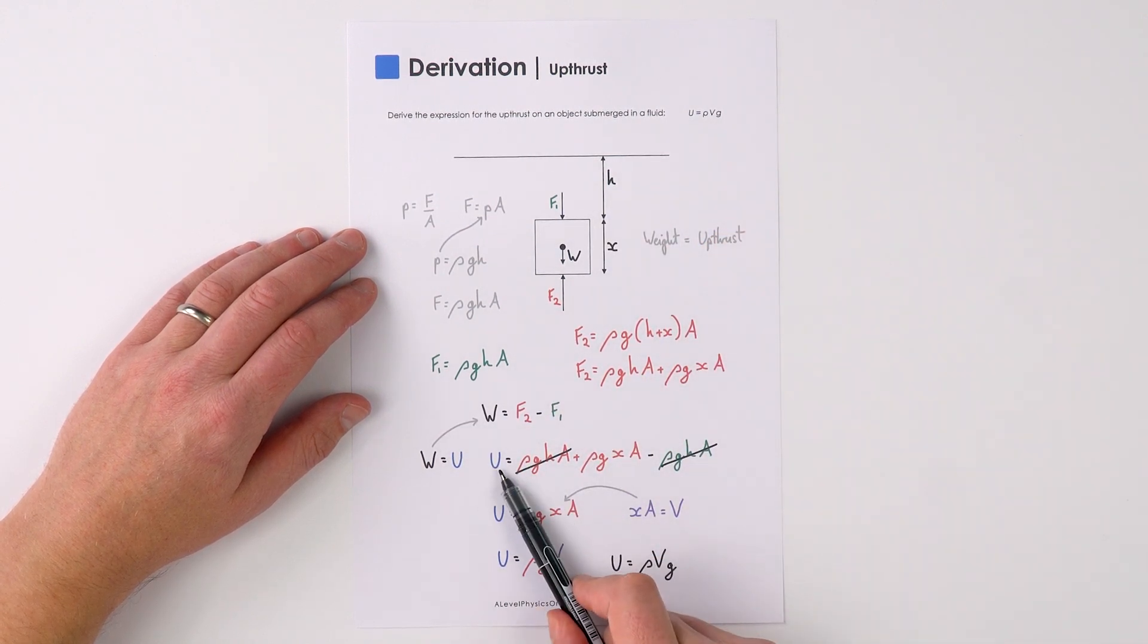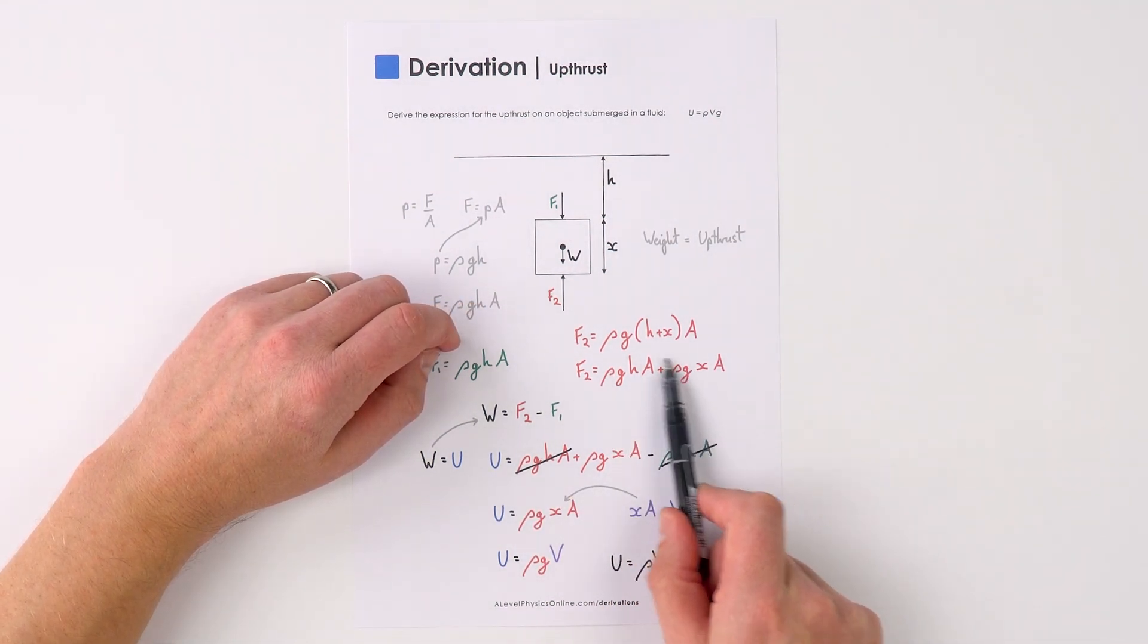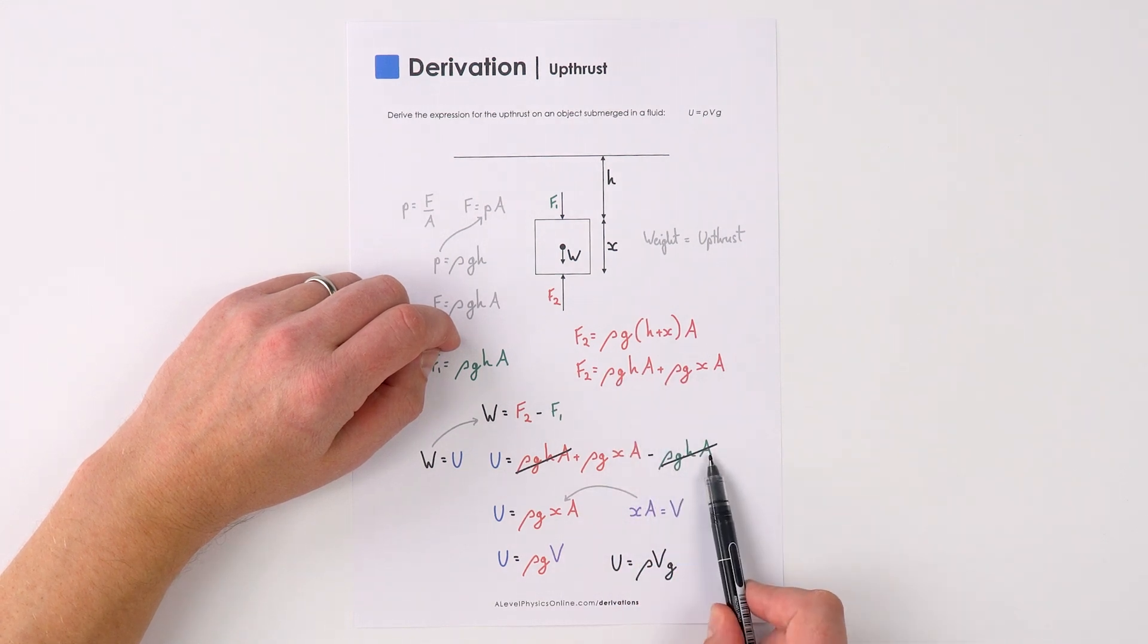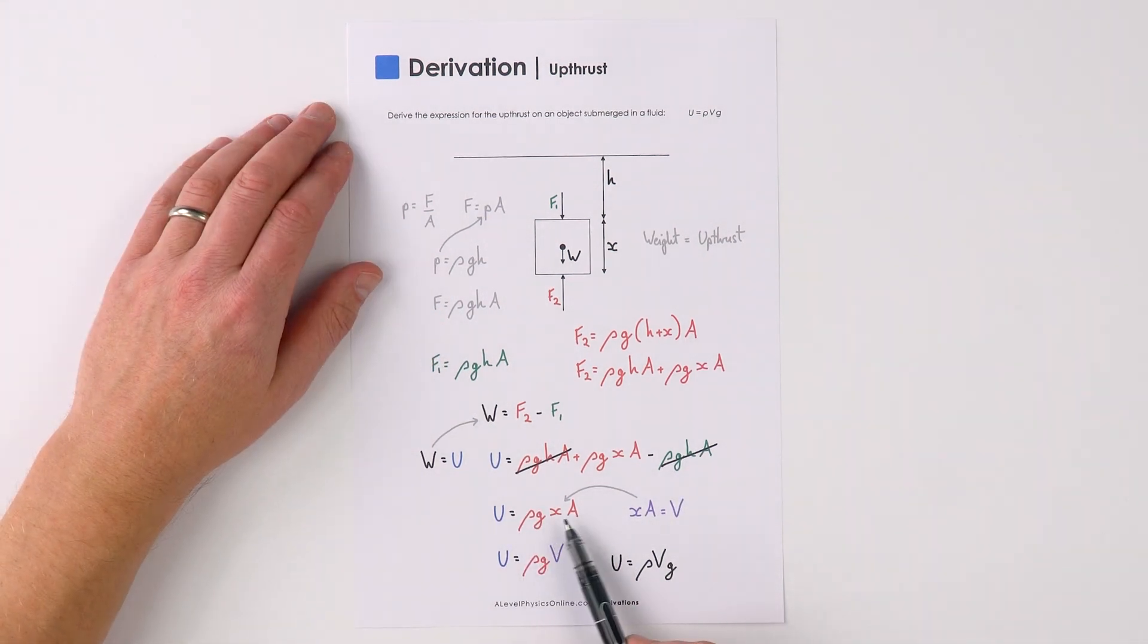So we can say that the upthrust is equal to ρgha plus ρgxa, that's force 2, take away the size of force 1. We can see that these two things cancel to show that the upthrust is equal to ρgxa.